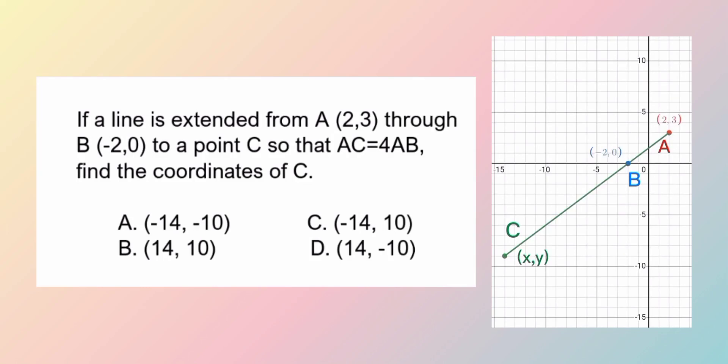If a line is extended from point A (2,3) through point B (-2,0) to a point C so that AC is equal to 4AB,